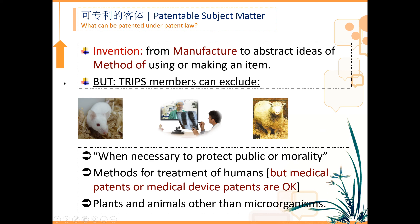Under Chinese law, there is similarly a list enumerating things that are not patentable. Animals and plants are not patentable under Chinese law or the patent law of most countries, but the processes and methods used to produce animals and plants are of course patentable as method patents. To summarize, international laws define invention in a very broad sense — from devices and machines to abstract methods of using or making an item.